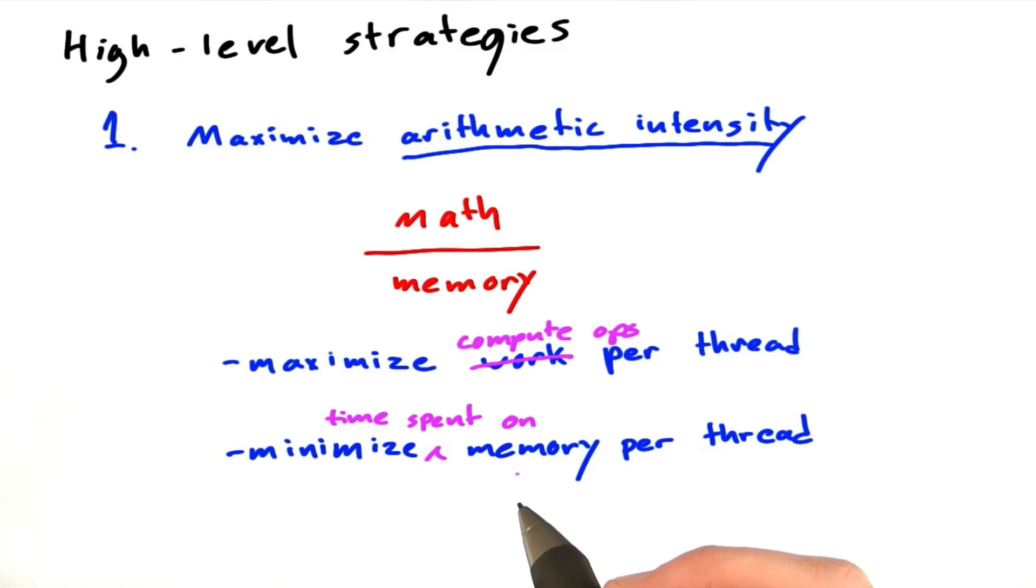And I phrased this carefully because it's not the total number of memory operations we care about. And it's not the total amount of memory that comes and goes in the course of a thread executing its program. It's how long it takes us to do that. So there are a lot of ways to spend less time on memory accesses. And that's what we're going to talk about now.